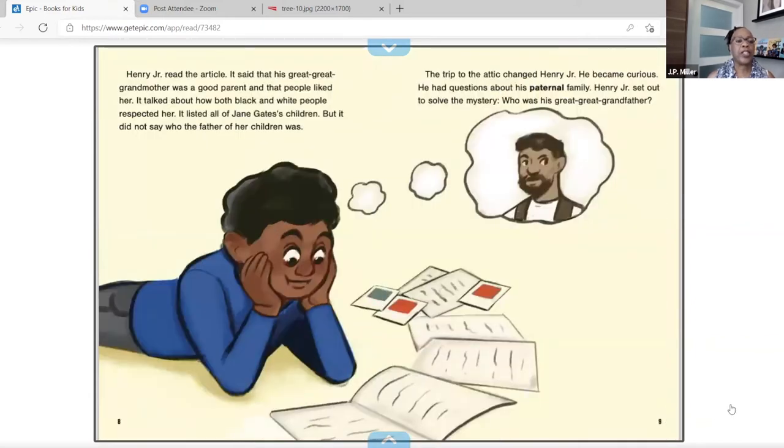Henry, Jr. read the article. It said that his great, great grandmother was a good parent and that people liked her. It talked about how both Black and white people respected her. It listed all of Jane Gates' children, but it did not say who the father of her children was. The trip to the attic changed Henry, Jr. He became curious.